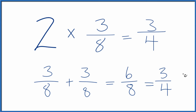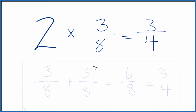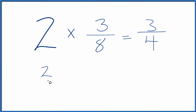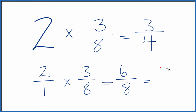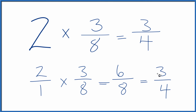There is one other way we can do this. We could consider 2 to be 2 over 1 — we're just dividing by 1, so it's still 2. Now we can multiply this fraction times 3 eighths. When we multiply fractions, we just multiply the numerators, then the denominators. 2 times 3 is 6, and 1 times 8 is 8, which simplifies to 3 fourths. This is Dr. B — multiplying 2 times 3 eighths. The answer? 3 fourths. Thanks for watching.